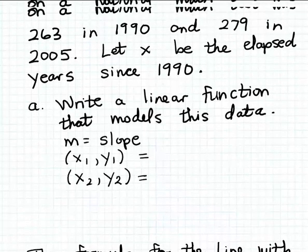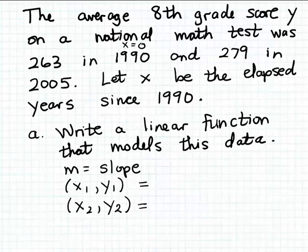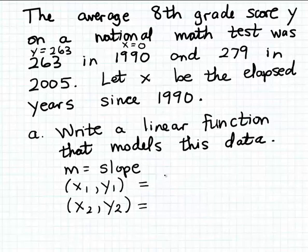The data given in the problem comes in handy here. The math score y was 263 in 1990. Since x represents elapsed years from 1990, the year 1990 corresponds to x = 0. The corresponding y value is 263, because that was the test score in 1990. So one point on our line is (0, 263).